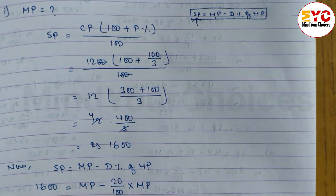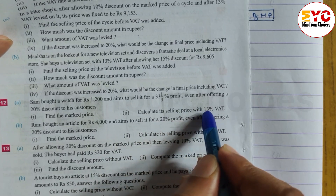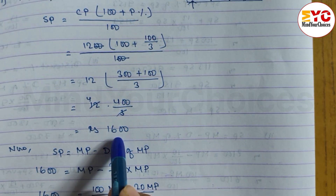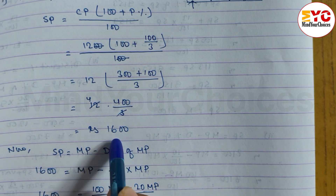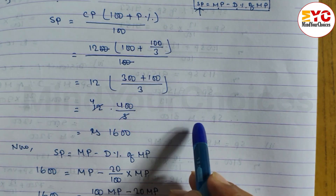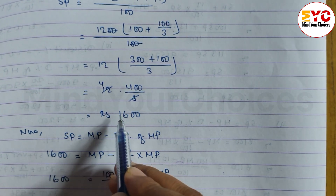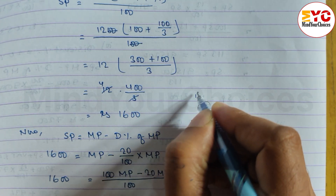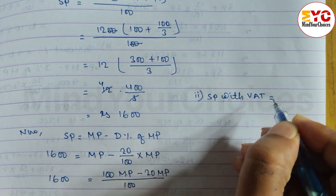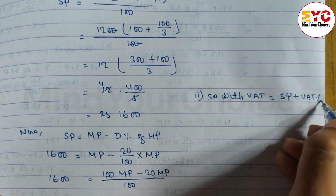Part 2: Calculate the selling price with 13% VAT. The shopkeeper sells at SP of 1600, but we also need to pay tax. So the final price is SP plus VAT. Number 2: SP with VAT. The formula is SP with VAT = SP plus VAT percent of SP.